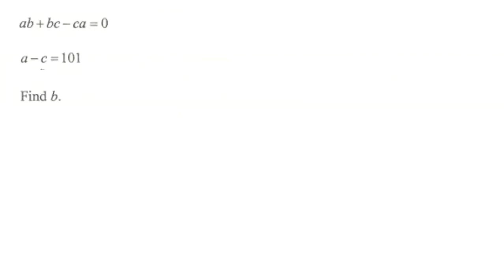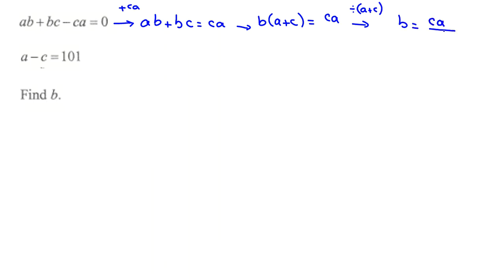The problem says find B. So one important idea is replacement. Here I want to find B, I use replacement. If we add CA to both sides, AB plus BC equals CA. If I factor B, it will be B times A plus C equals CA. If we divide by A plus C both sides, B equals CA over A plus C. So we found B in terms of A and C.